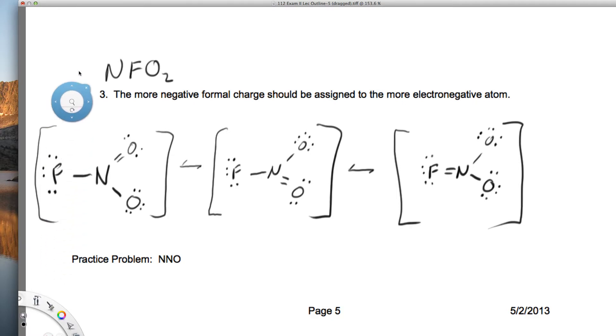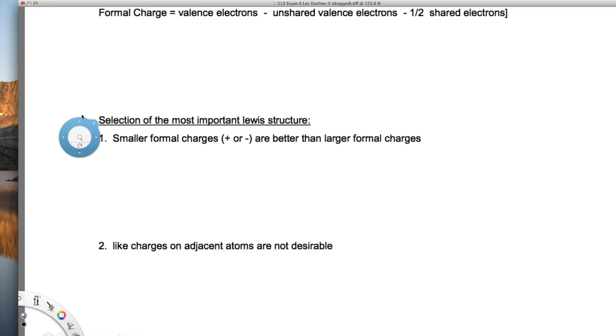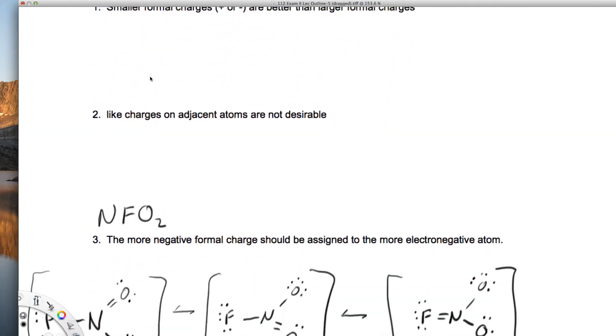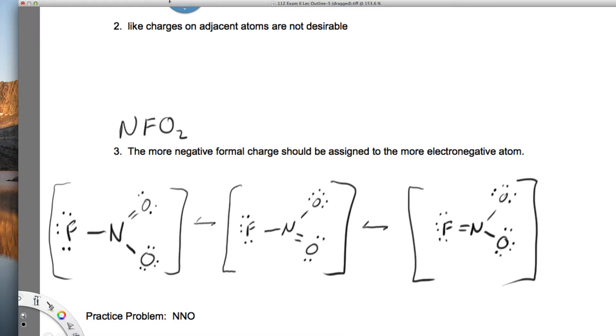If you remember, the way we assign formal charge is the valence electrons minus the unshared valence electrons minus half the shared electrons. You might remember I said valence electrons minus dots minus dashes. If we take a look at this first structure on fluorine: Fluorine has seven valence electrons, oxygen has six valence electrons, and N has five.